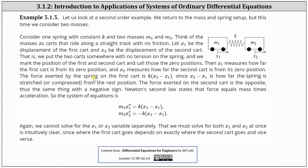The force exerted by the spring on the first cart is the spring constant K times the difference of x2 and x1, since x2 minus x1 is how far the spring is stretched or compressed from the rest position. The force exerted on the second cart is the opposite, thus the same thing with a negative sign.